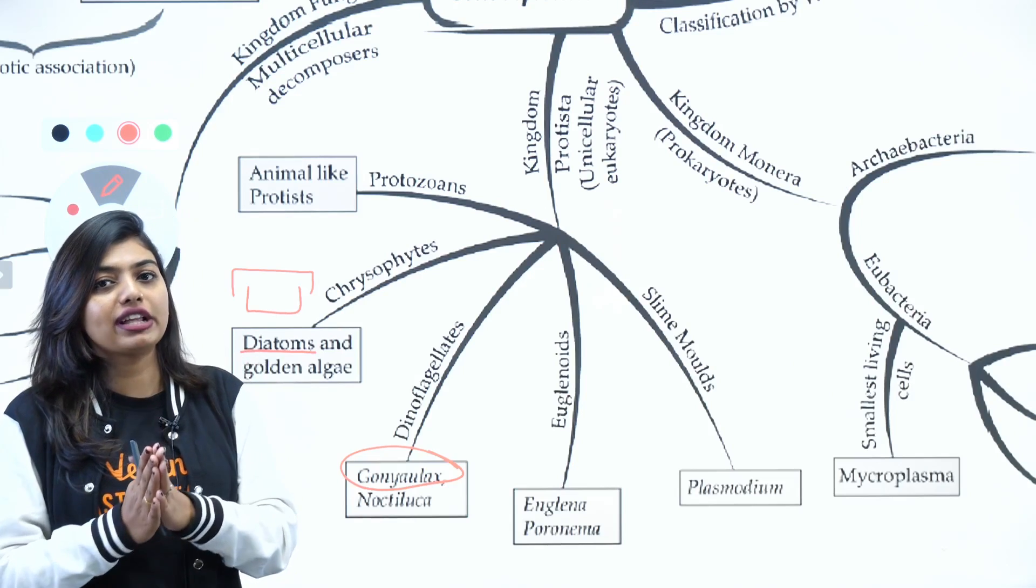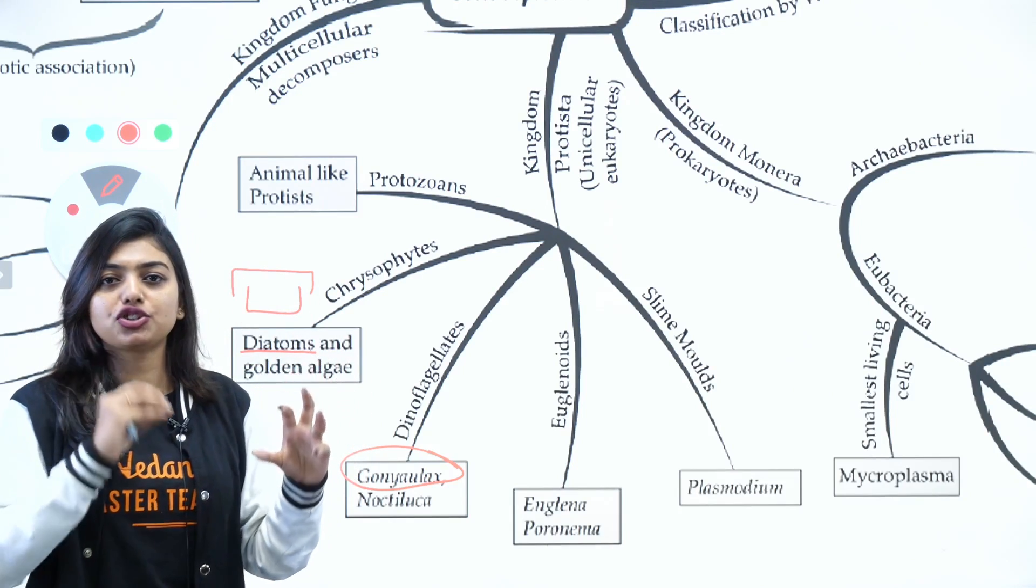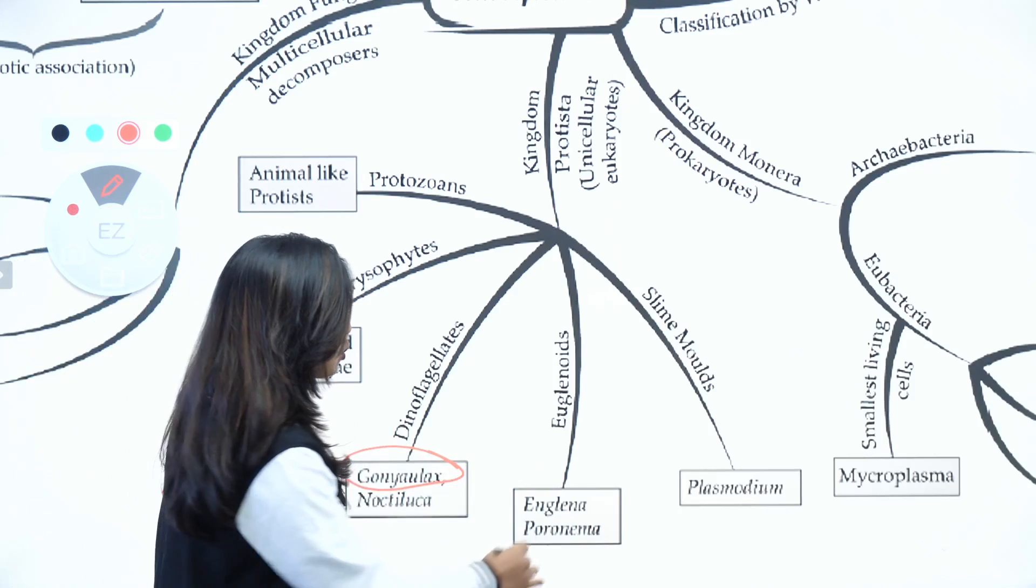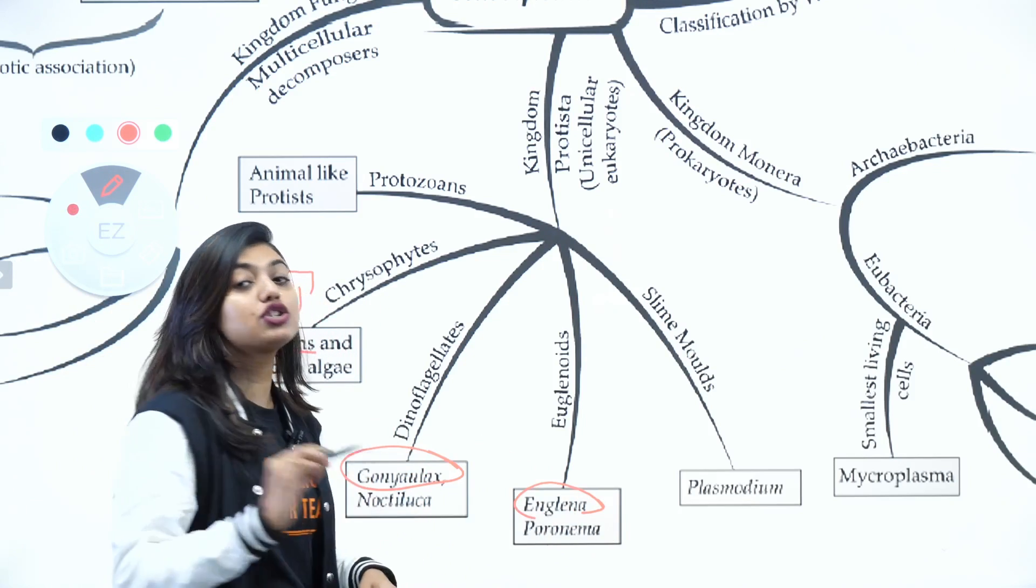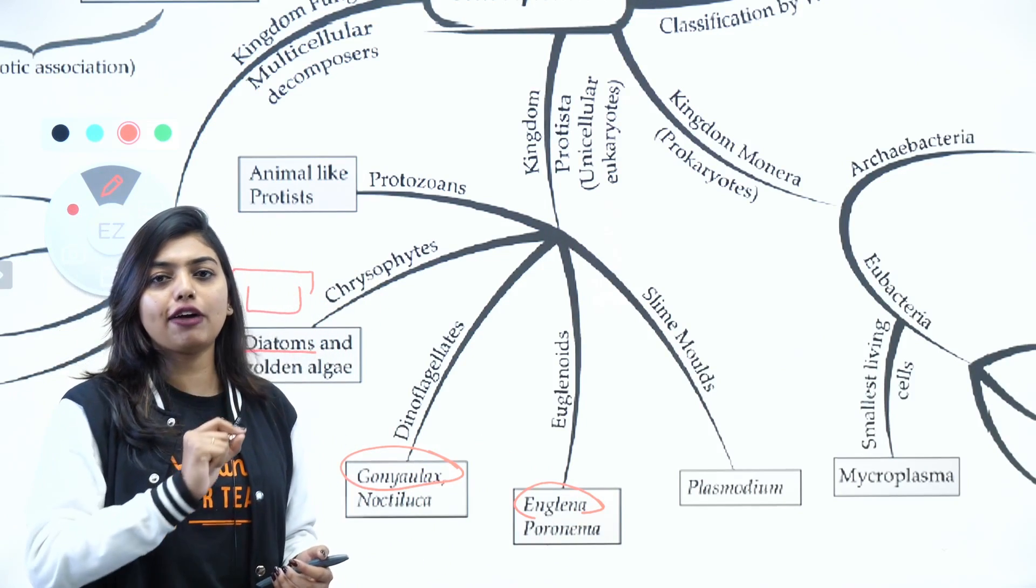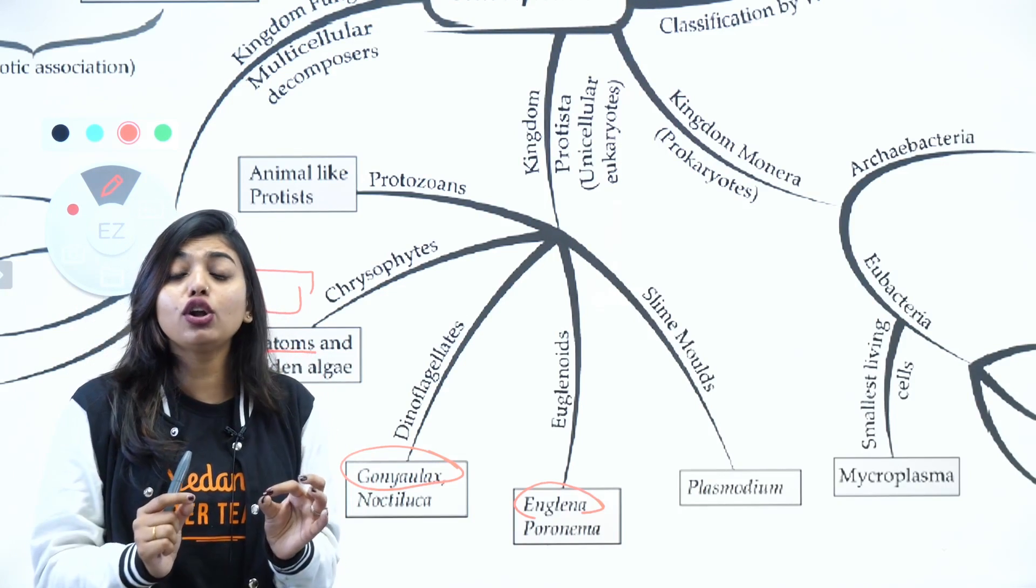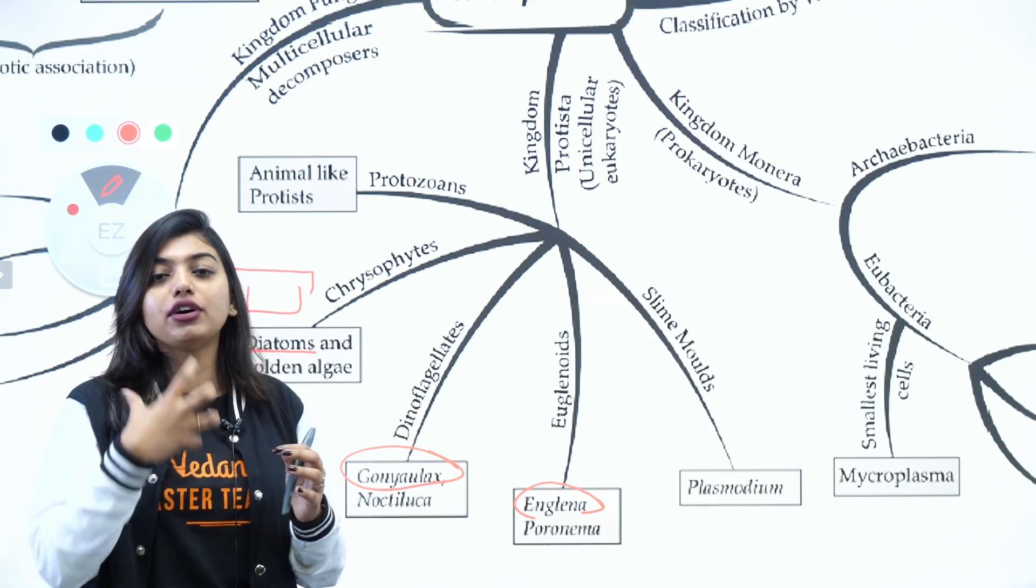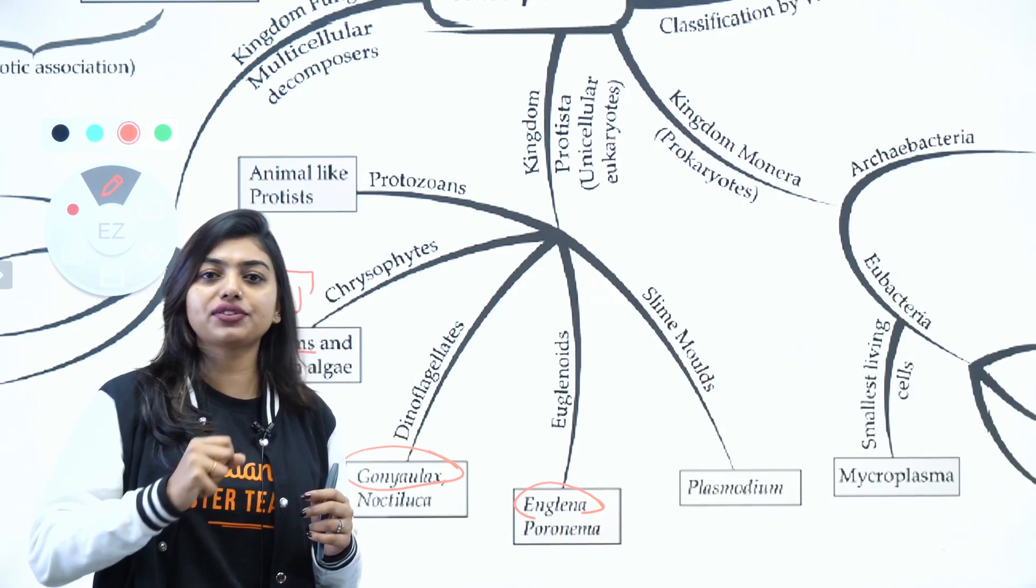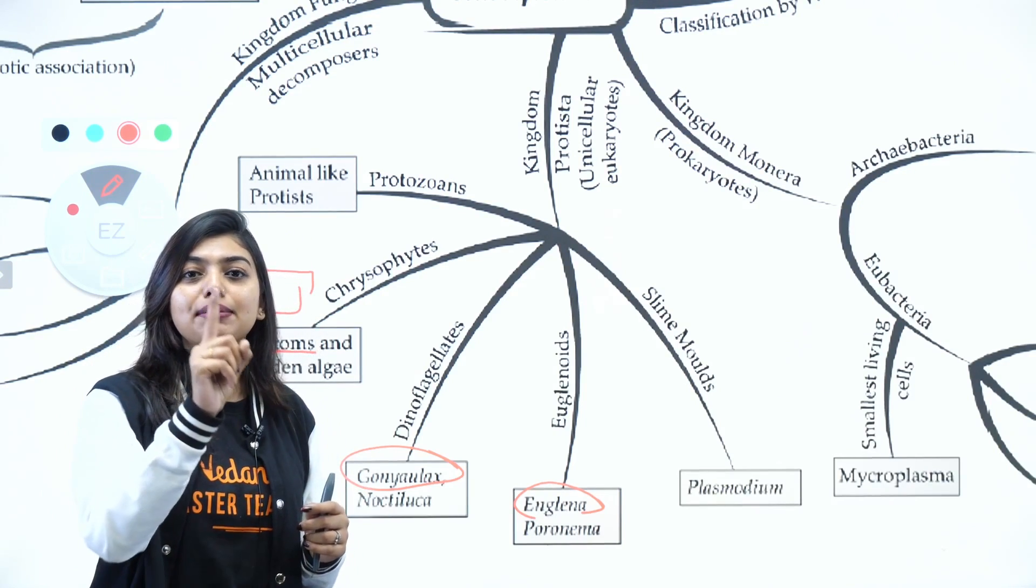When we come to Euglenoids, the most important example is Euglena. They also have flagella, but they have a long and a short flagella. Euglenoids have an autotrophic nature in the presence of sunlight, and in the absence of sunlight they become heterotrophs or they feed on smaller organisms.